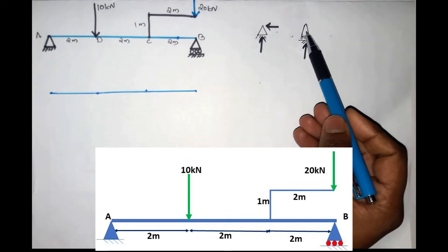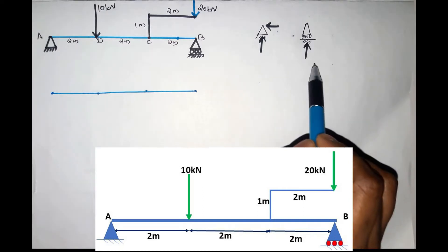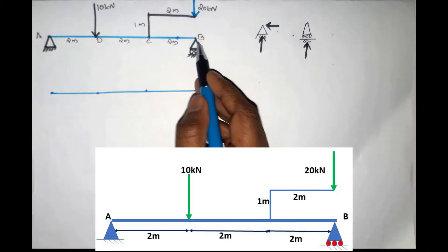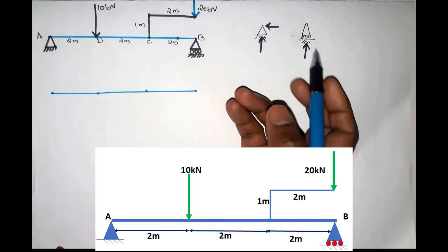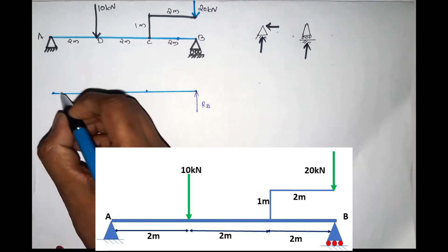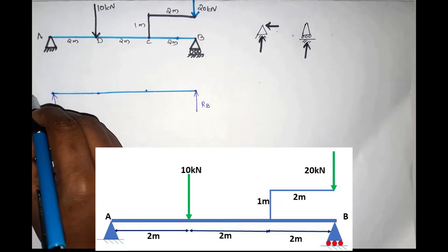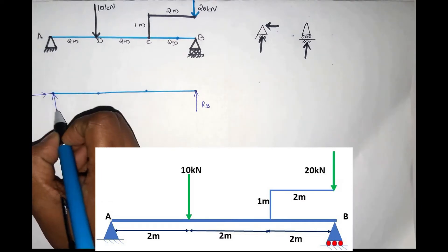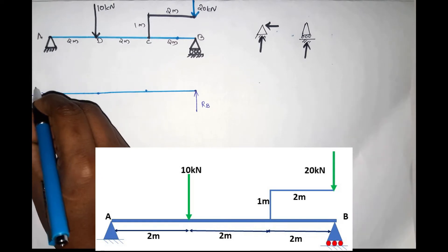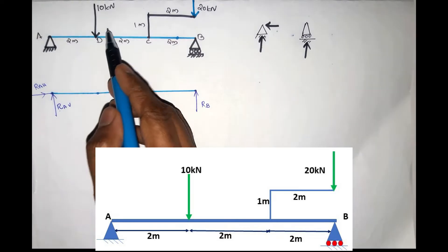You will draw the free body diagram. Support this reaction — name Rb here at the roller. At the hinge, we have horizontal and vertical components: Rah here and Rav here. This is the first step.